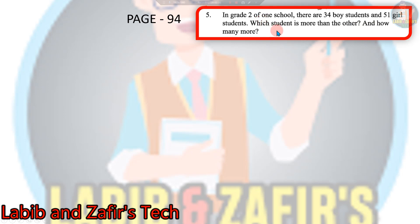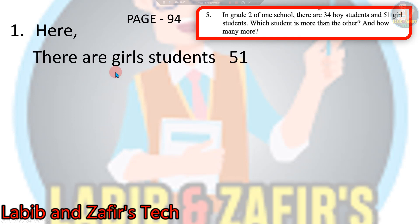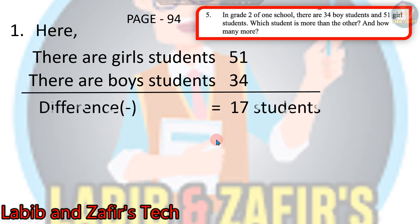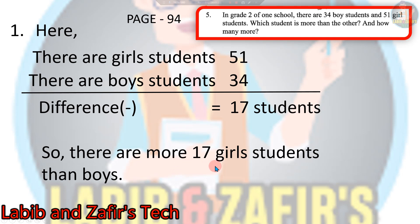So students, here it is told that in a school in grade 2, there are 34 boy students and 51 girl students. We have to find which student is more and by how many. Since 51 is greater than 34, we write the number of boy students below the number of girl students. The difference is 51 minus 34. That is: 11 minus 4 is 7, 1 in hand, 3 plus 1 is 4, then 5 minus 4 is 1, that is 17 students. So there are 17 more girl students than boys.